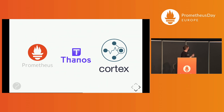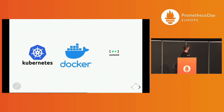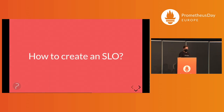It works with Prometheus, Thanos, and Cortex — or every other product that implements the query or query range APIs. You can deploy it on Kubernetes; it has a CRD. Or you can just use Docker or the binaries to generate the rules and alerts for Prometheus.